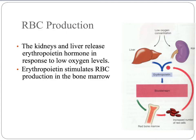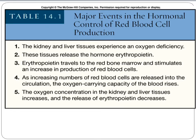The kidneys and liver contain chemoreceptors that monitor oxygen levels. If oxygen levels go down, both the kidney and the liver can release a hormone called erythropoietin. Erythropoietin travels through the blood to its target organ, red bone marrow, and stimulates the production of new red blood cells. As more red blood cells are made, they carry more oxygen, and the kidney and liver no longer detect low oxygen levels, so they stop making erythropoietin. That's a classic example of a negative feedback loop. There's also a nice chart in your book you can reference to review the steps in red blood cell production.